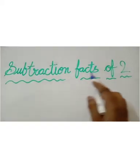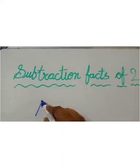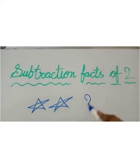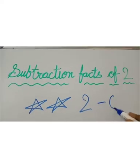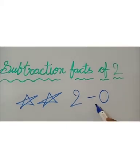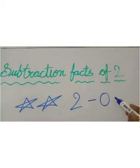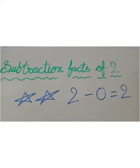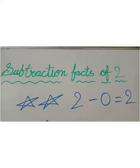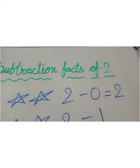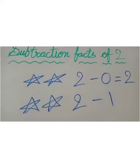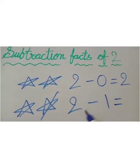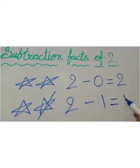Now let's say subtraction facts of 2. If I have 2 stars and I gave you 0, then 2 minus 0 is equal to 2. And now, if I have 2 stars and I gave you 1 star, so I have now 1 star. Means 2 minus 1 is equal to 1.